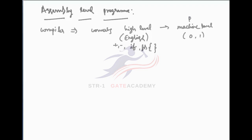Machine level language consists only of zeros and ones, because the machine — the processor — is designed with basic semiconductor devices like transistors and diodes, whose operation is ON and OFF. ON is taken as one, OFF is taken as zero. That's why the processor understands only zeros and ones, also called binary language. The compiler converts high-level language to binary language.